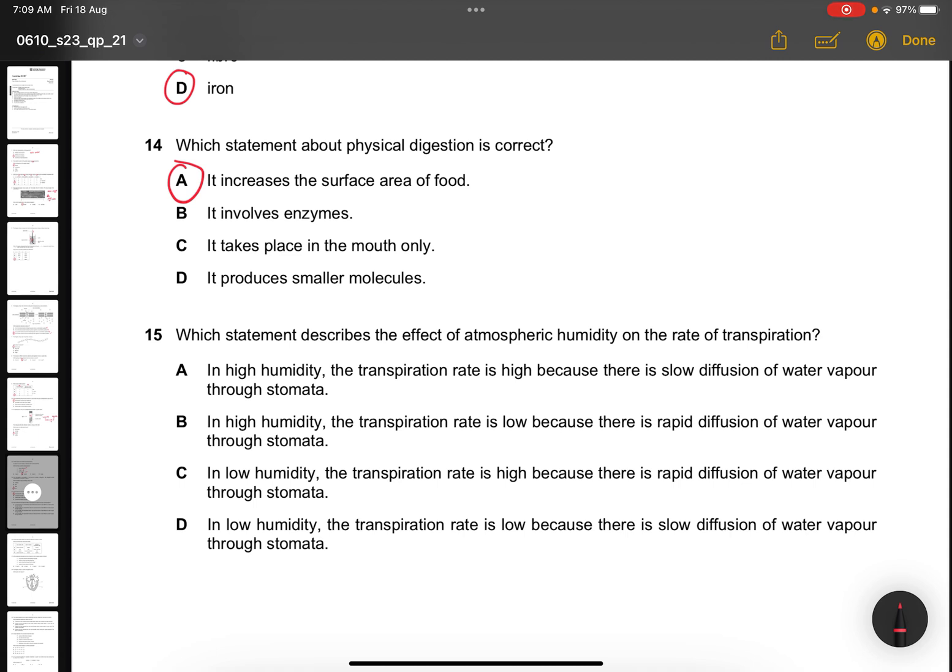Question 15. Which statement describes the effect of atmospheric humidity on the rate of transpiration? In high humidity, the transpiration rate is high? No, high humidity means lower transpiration rate. In high humidity, the transpiration rate is low because there's a rapid diffusion of water? No, it can never be this.